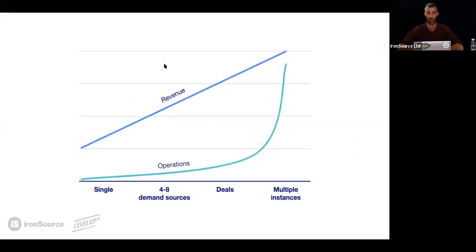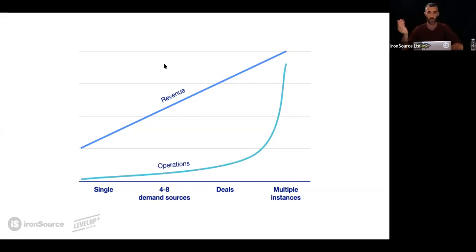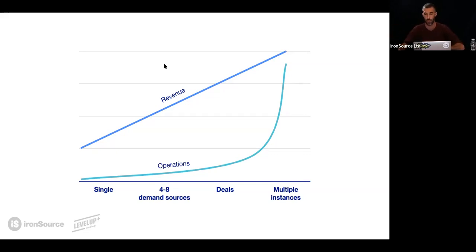In the following diagram, I'm trying to explain the structure. Throughout the stages, revenue clearly increases from single demand source to multiple deals and then multiple instances — every step increases yield, and if that weren't the case, we wouldn't have seen each step taken throughout the years. On the operations side, each step also adds operational work. With a single source, there's almost nothing to do, but with several you need to optimize and prioritize. Deals take more time — reaching out to networks, getting responses, signing contracts. With multiple instances, you're setting up hundreds to thousands. We'll see how the future looks shortly.